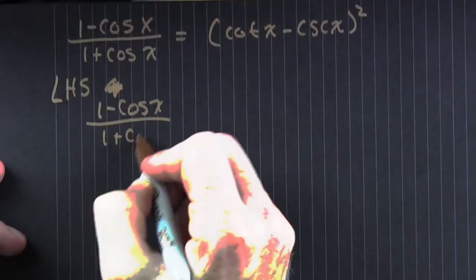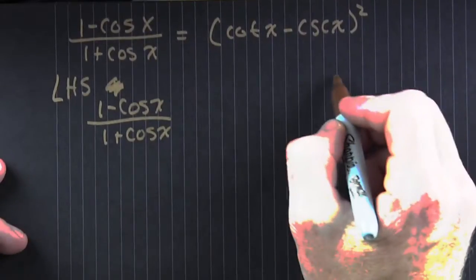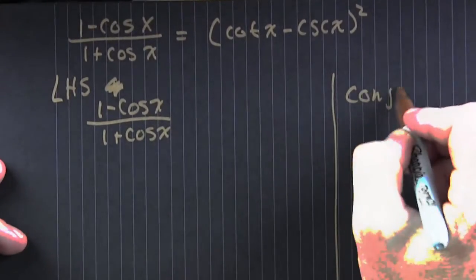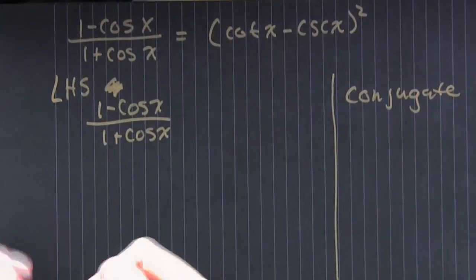On the left-hand side, we write it down. We're not lazy. We have (1 - cos x)/(1 + cos x), and we're going to try to multiply top and bottom by the conjugate.